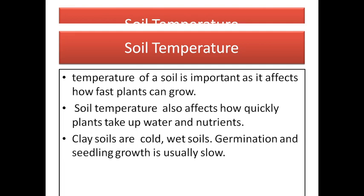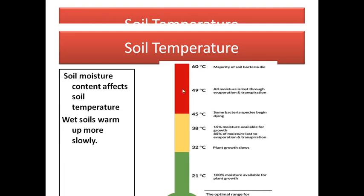Soil temperature is a very important factor because it affects plant growth. Soil temperature also affects how quickly plants take up water and nutrients. Clay soils are cold in nature, and wet soils are also cold. The germination of plants in clay and wet soils is naturally quite slow. Plant nutrient availability and absorption of nutrients all depend on soil temperature. Wet soil warms up more slowly.